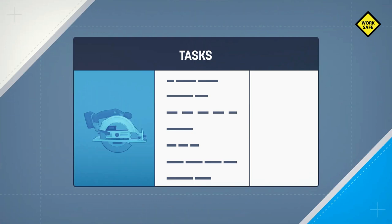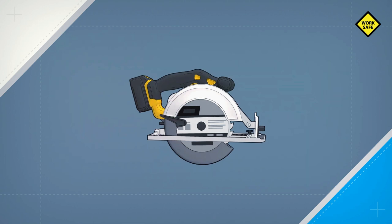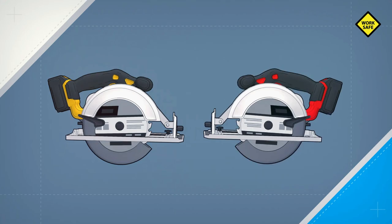Obviously, a circular saw is made for sawing, but you need to know how to use it properly and ask yourself if it's the right tool for the job. By the way, most circular saws are made for right-handed people, but there are also models for left-handers.